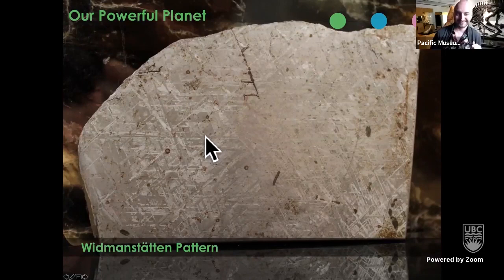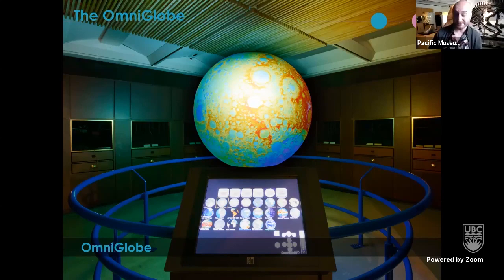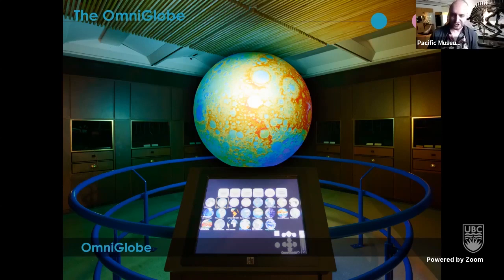Our final section is the OmniGlobe. Unfortunately I can't show it via Zoom as animations bog down the connection, but the OmniGlobe is a spherical screen that can display information about Earth, the Moon, Mars, and other planets — showing ocean and atmosphere movement, and migrations.